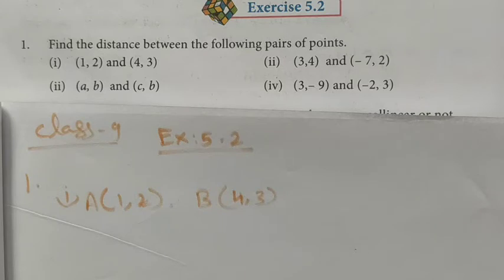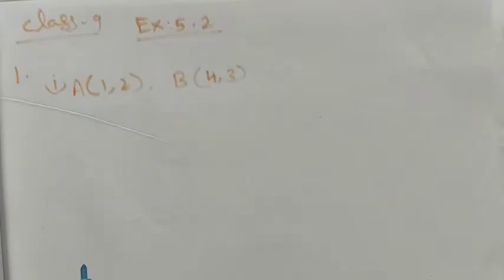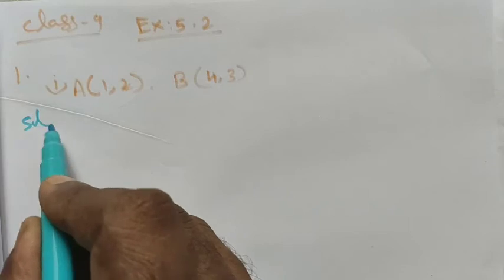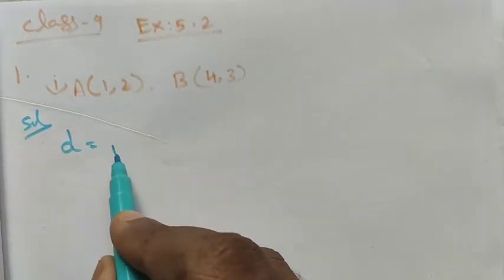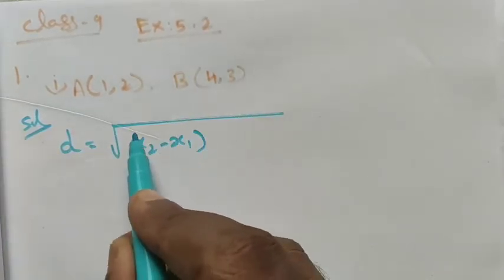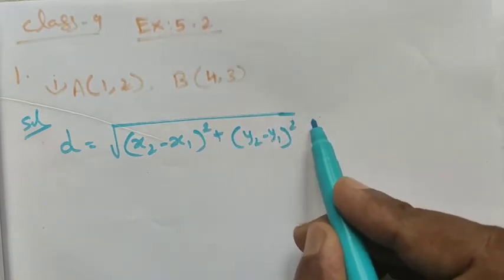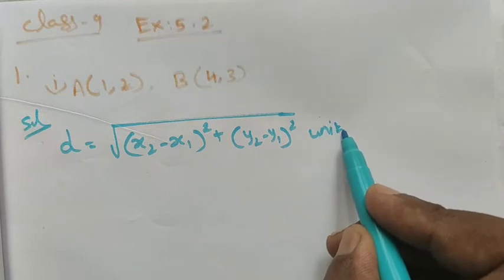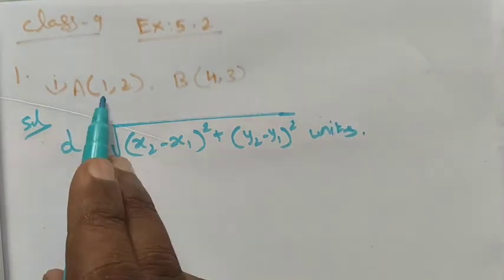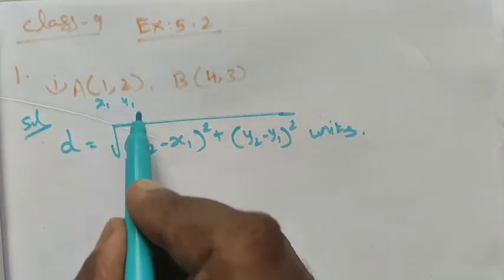Let me take these as points A and B. We want to find the distance between the two points. We know the distance formula: d = √((x2-x1)² + (y2-y1)²) units. So the first point we take as (x1,y1)...